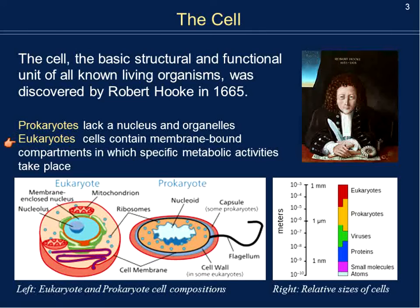The eukaryote is different in that it contains membrane-bound compartments, essentially what you would call organs, where they each perform specific metabolic activities — just like your heart performs a certain activity versus your digestive tract versus your lungs. A eukaryote also has a cell membrane but has a defined nucleus, the nucleolus, the nucleus, and the mitochondrion — these all serve different functions, and they also have ribosomes. A eukaryote is approximately one millimeter in length or diameter, something you can see with the naked eye.